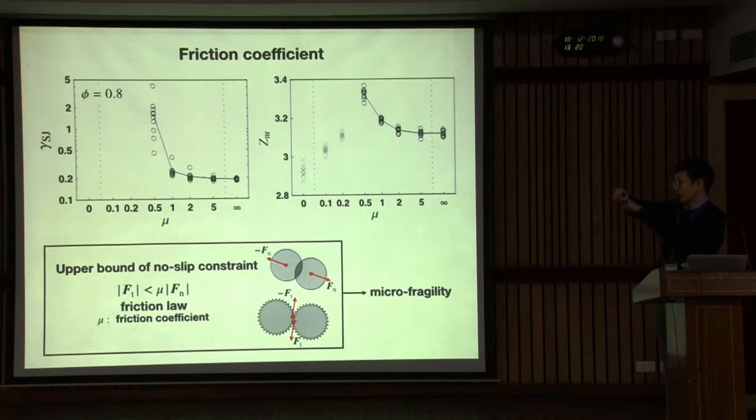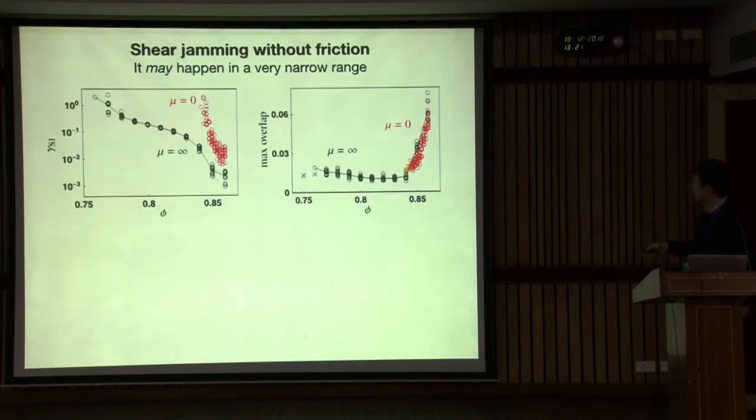Then this is a plot of friction coefficient dependence. I think this is actually interpolating from two isostatic conditions, from three to four. In frictionless system, isostatic condition is four. Infinite friction, this is three. This is not exactly three, but the line is similar. This is a result of area fraction 80%. But if I connect all simulation results, probably I can draw this kind of curve.